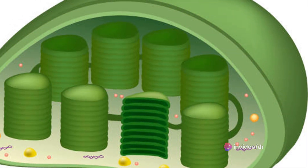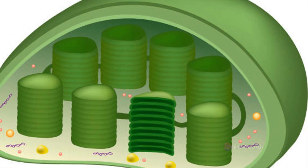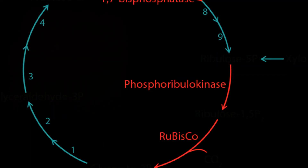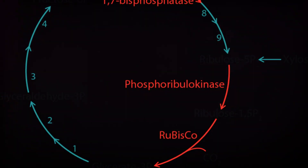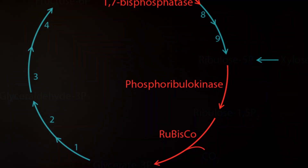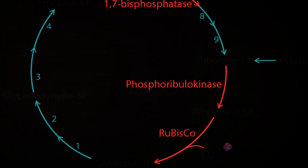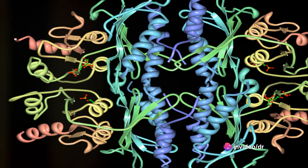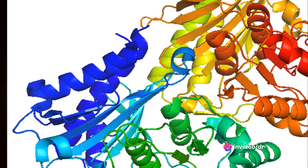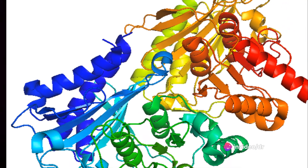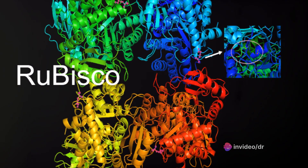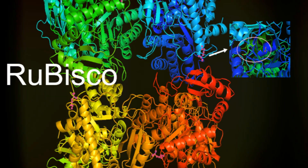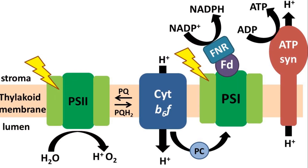The whole process occurs in the stroma of the chloroplast. The Calvin Cycle is operated by 11 different enzymes that catalyze 13 reactions. The key regulatory enzymes — Rubisco, FBPase, SBPase, and PFKs — play a major role in carbon dioxide fixation. Rubisco is the most abundant enzyme on Earth.